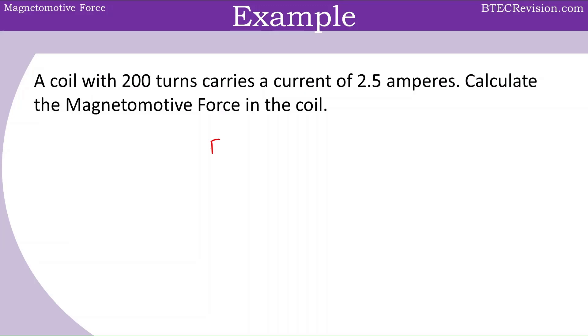We can start by writing down our equation Fm equals NI. We know the number of coils is 200, so that's 200 times the current of 2.5, and that can give us a value of 500 and the unit is ampere turns.